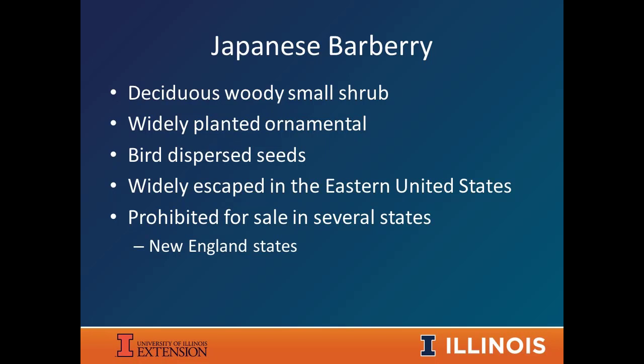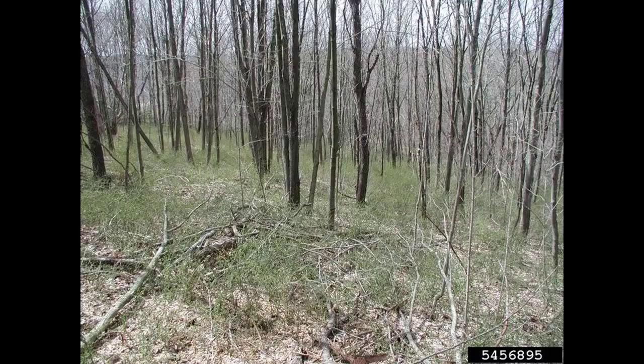The last shrub I'll mention before management is Japanese barberry. Once we started looking for it, I was surprised by how much we found. It seems similar to honeysuckle in that it invades even high-quality, undisturbed, mature forests without needing disturbance. We're finding it in nature preserves and some of our really high-quality forests, which is why we're worried about it.